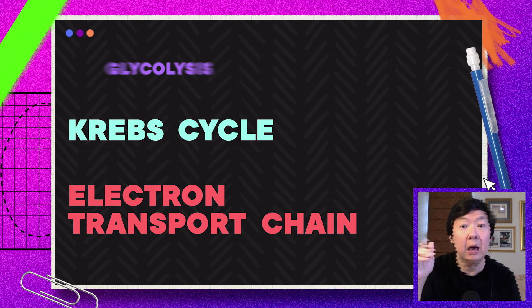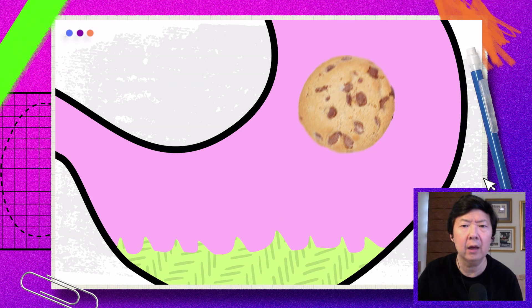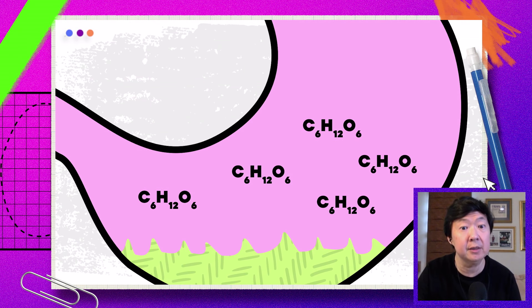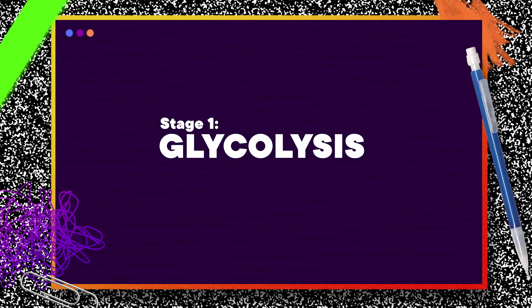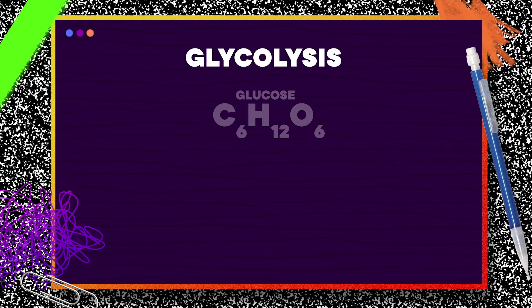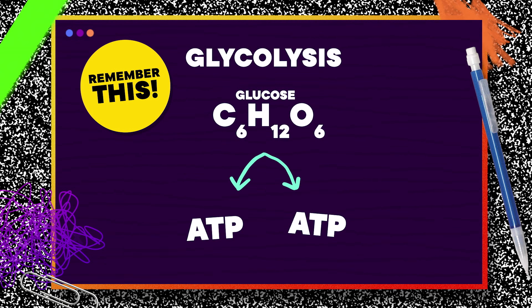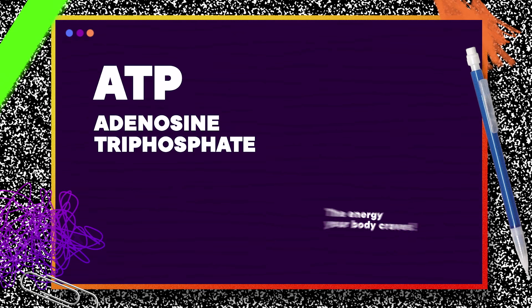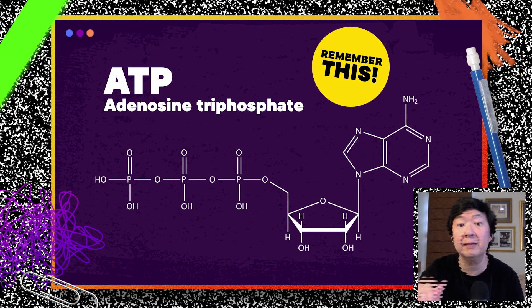Cellular respiration is made up of glycolysis, the Krebs cycle, and the electron transport chain. Ken uses a mnemonic to remember the stages: 'Good Can-Can Eat That Cookie.' Stage one is glycolysis, where a single glucose molecule from a cookie is split apart into two smaller molecules. In the process, two ATP are released. ATP — adenosine triphosphate — is the whole point: it is chemical energy broken down small enough that your cells can actually use it. So far, we've got two ATP.